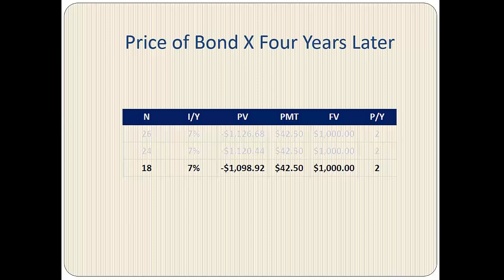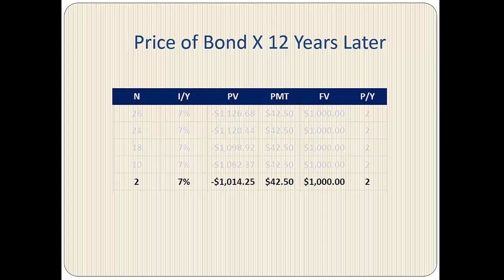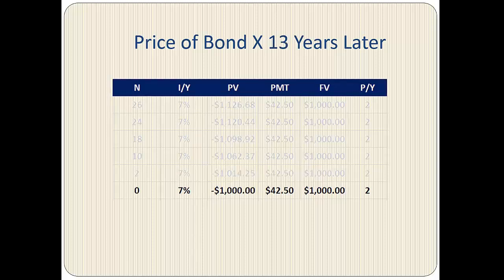Eight years later, five years or 10 semi-annual periods are left to maturity. With N equals 10, the present value is $1,062.37. Twelve years later, one year or two semi-annual periods are left to maturity. With N equals 2, we find the present value to be $1,014.25.